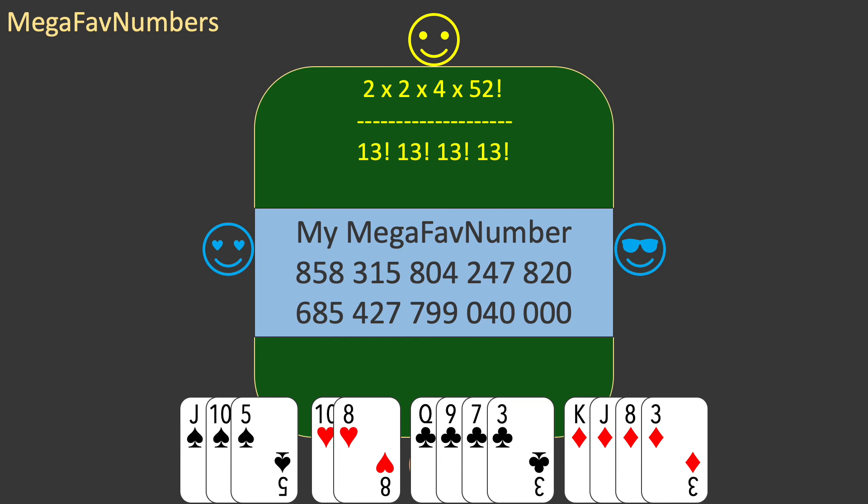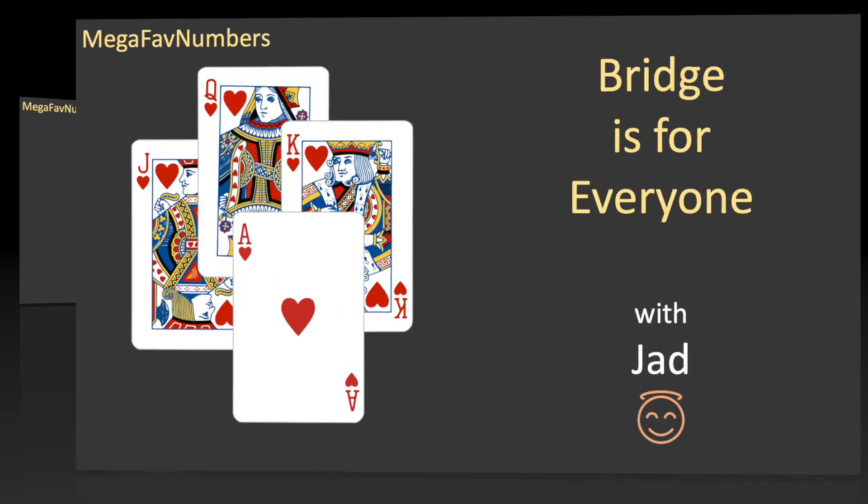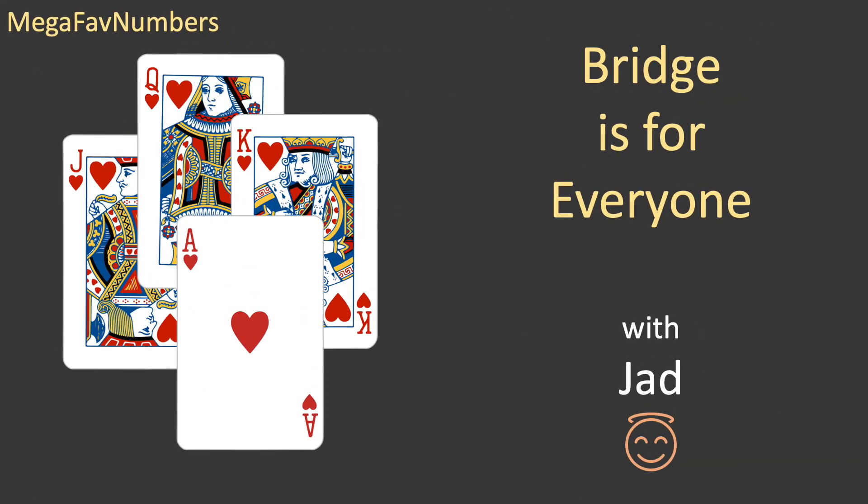Now there's an interesting number: 42. Where have I seen that before? Thanks for watching this special episode of Bridge is for Everyone. Because, like bridge, mathematics is for everyone.